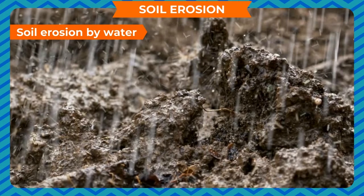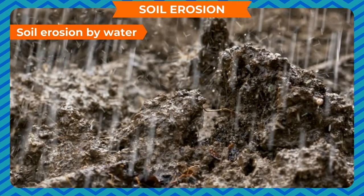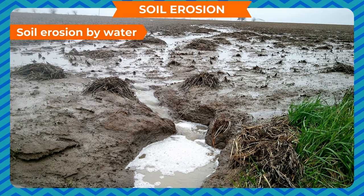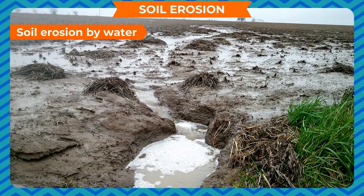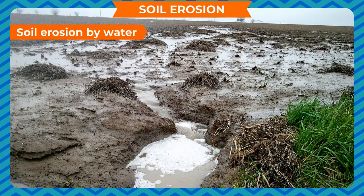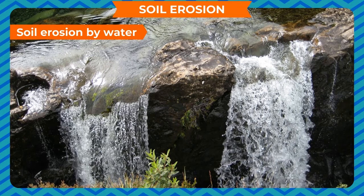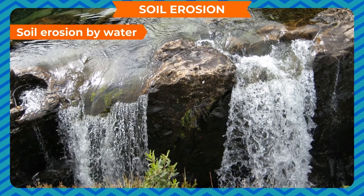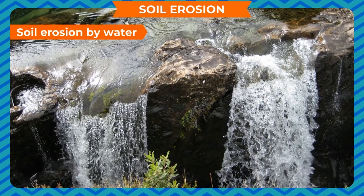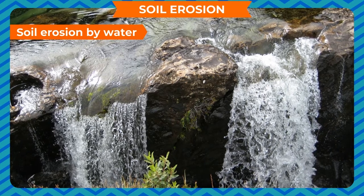When there is heavy rain, the rainwater carries away the topsoil and causes soil erosion. Water flows down very fast on hilly areas, causing soil erosion and making the soil unfit for cultivation.